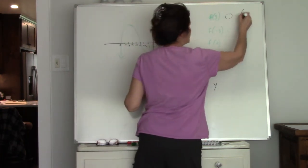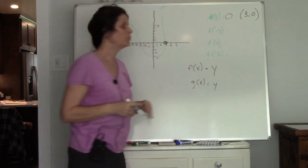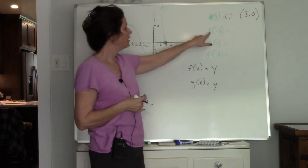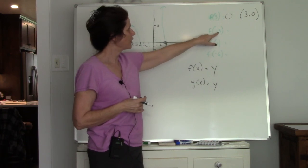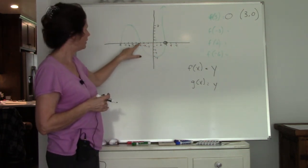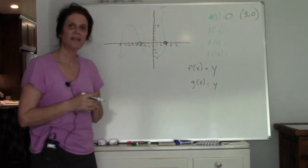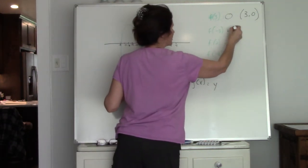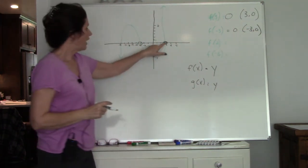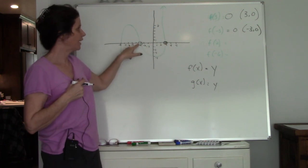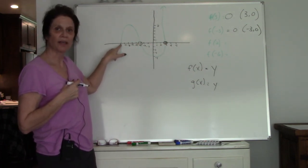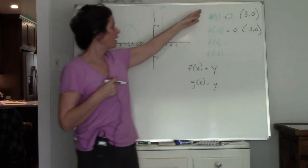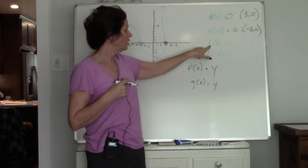You're used to seeing this as the ordered pair (3, 0) — when x is 3, y is 0. Now f of negative 3 is asking what's happening on our graph when x is negative 3. Coming over to negative 3 on the graph, the graph crosses the x-axis again, so when x is negative 3, my y value is 0. So I have an x-intercept at 3 and another x-intercept at negative 3.